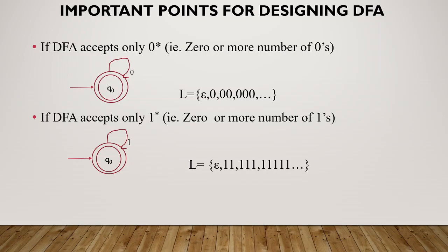If the DFA accepts 0 star — the first thing to understand is that epsilon is not an input. It's not an input I need to specify. Here 0 star means: one 0, two 0s, three 0s — any number of zeros. I can't say how many combinations there are. Our language is only 0 star. If you want to accept a string in the language, you accept that string.